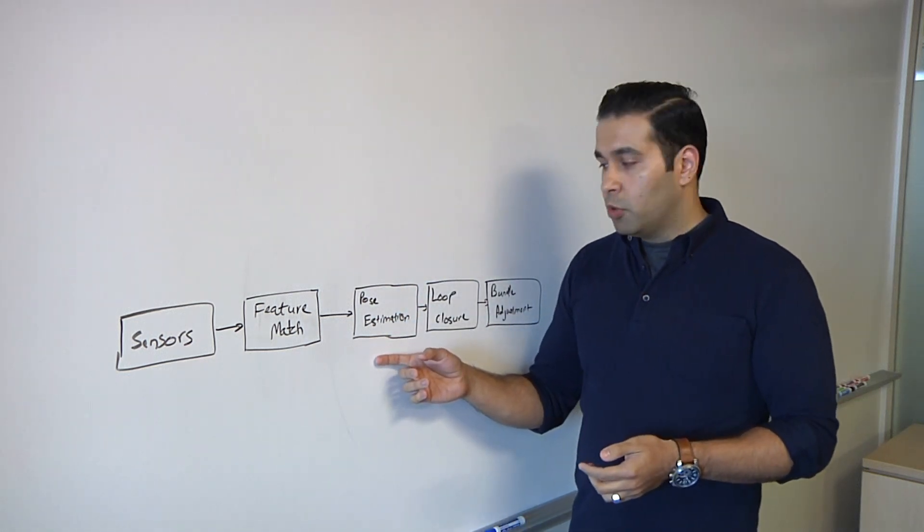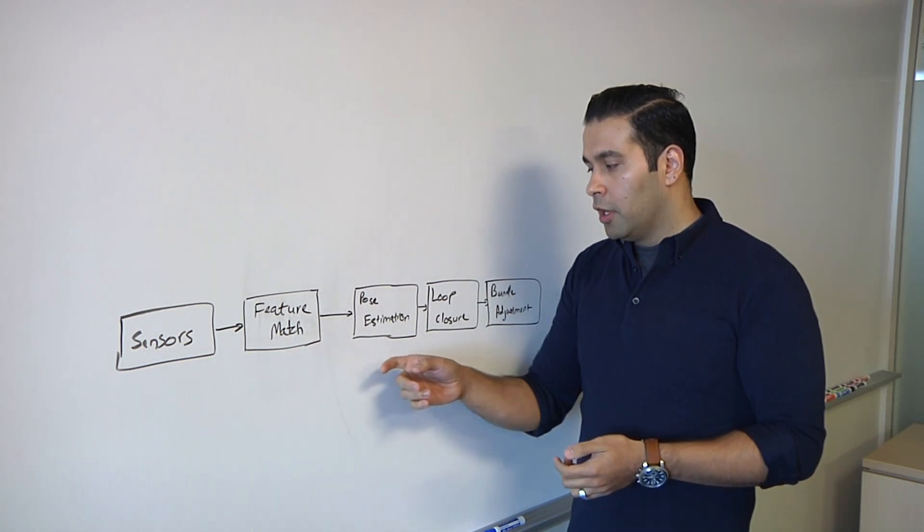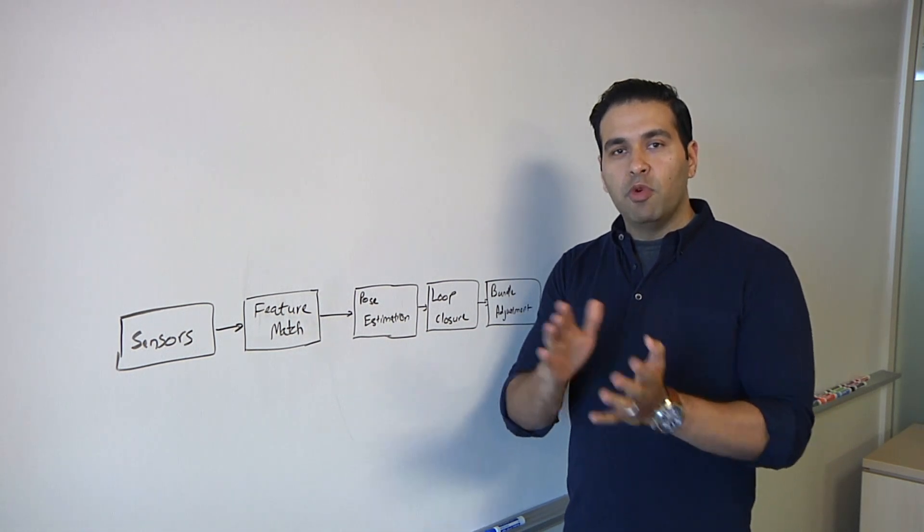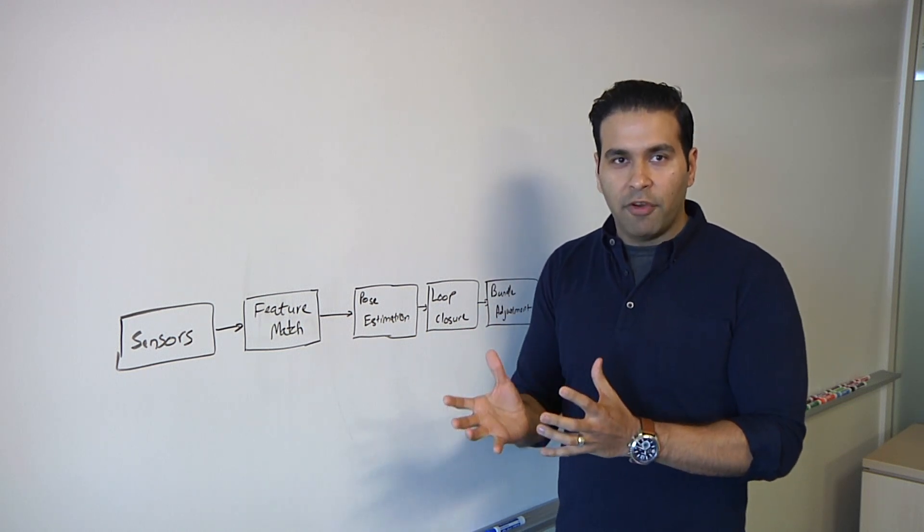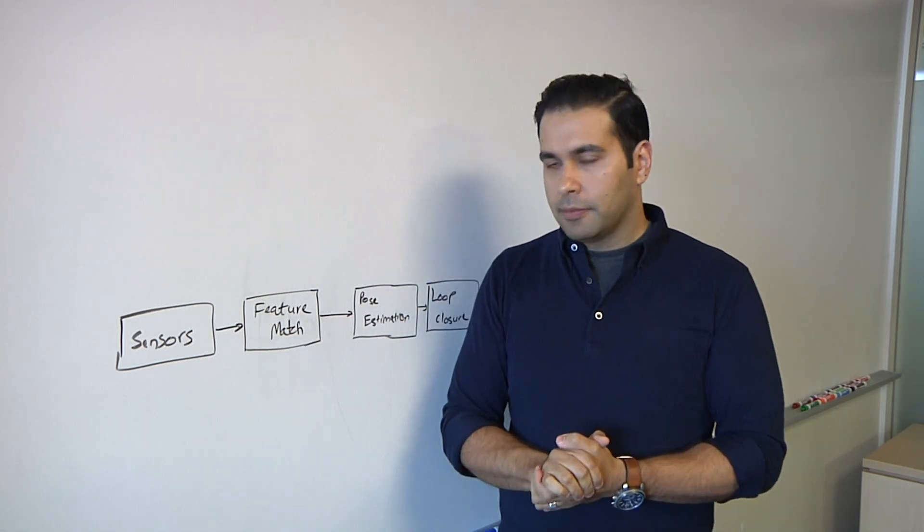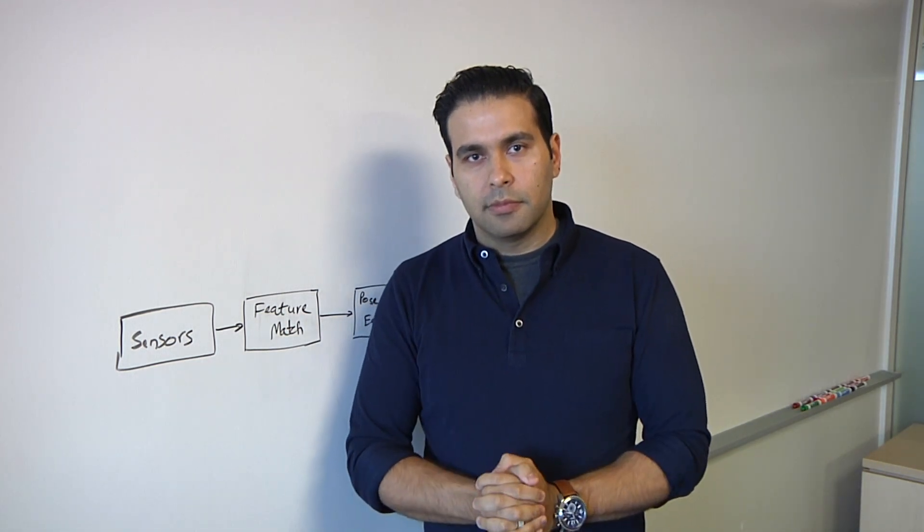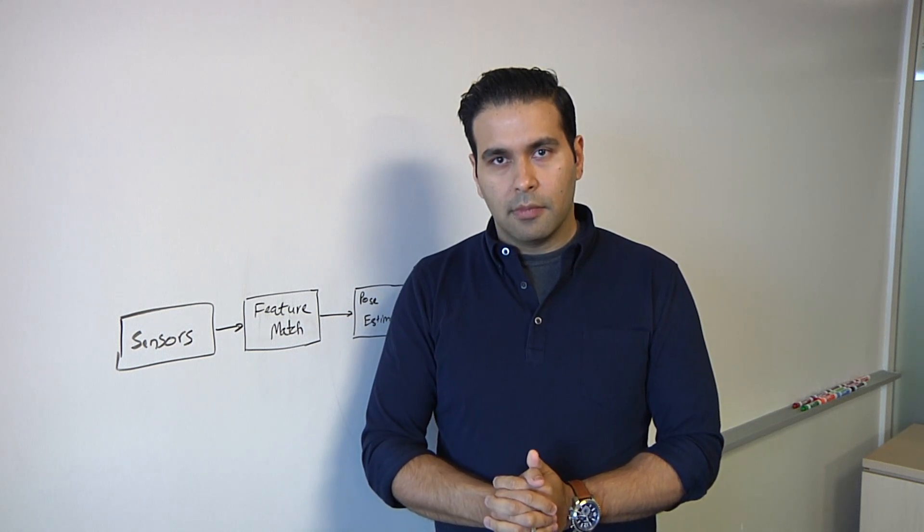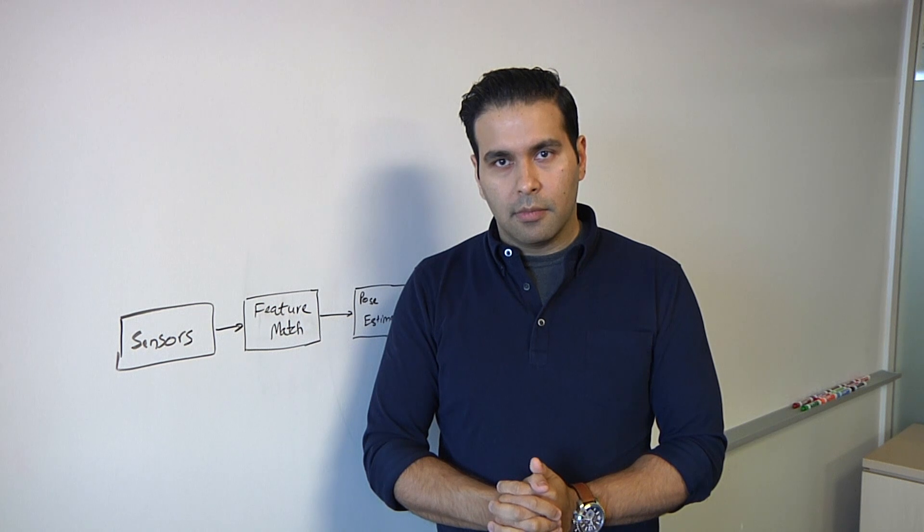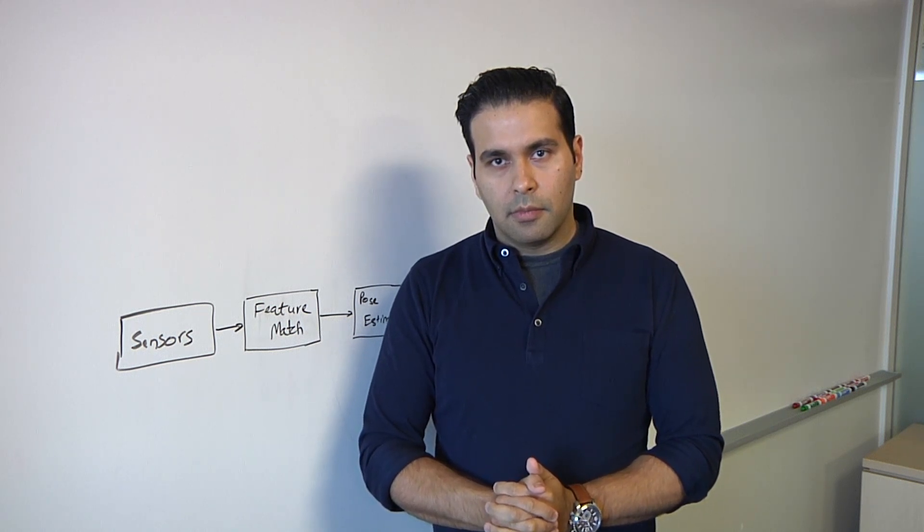Moving now to the pose estimation stage, you take these features that you have found, and you identify how they have moved from one frame to the next. That allows you to estimate how the camera or the object has moved from one frame to the next. The human brain tends to pick this up very easily with object permanence. But if you're looking at a billboard in a car, and the car has cameras on it, and you're driving along, does it understand that this billboard is the same billboard in the next frame as what you saw before? Because you're coming at it from a slightly different angle.